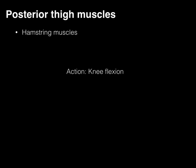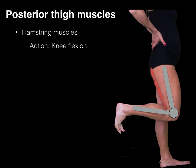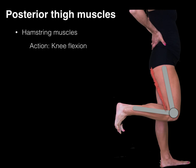Let's talk about the action of these hamstrings. Knee flexion is one primary action — the muscle arises from the ischial tuberosity and attaches to the posterior part of the knee joint, so when the muscle contracts it's going to flex the knee. This muscle also extends the hip.